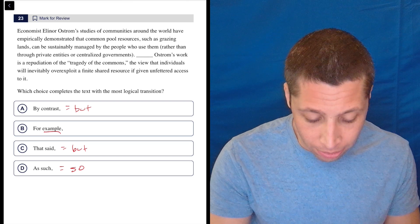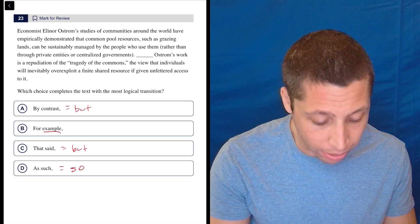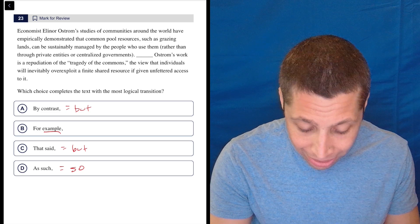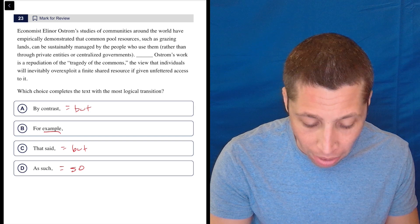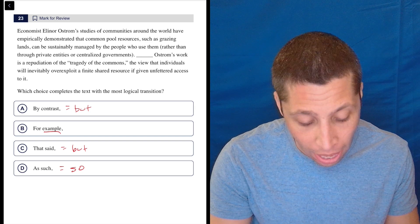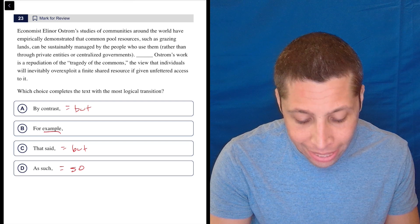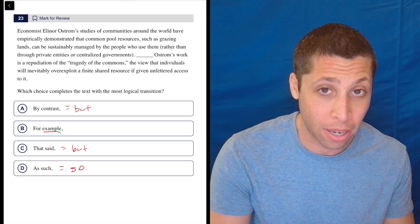Let's take a look. Economist Eleanor Ostrom's studies of communities around the world have empirically demonstrated that common pool resources, such as grazing lands, can be sustainably managed by the people who use them rather than through private entities or centralized governments. Ostrom's work is repudiation of the tragedy of the commons, the view that individuals will inevitably overexploit a finite shared resource if given unfettered access to it.